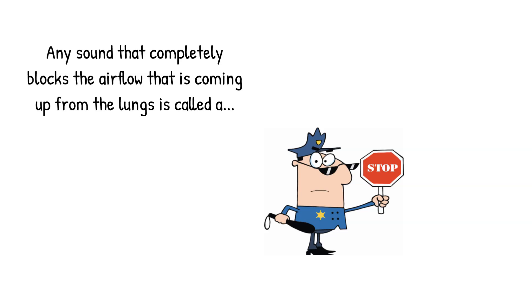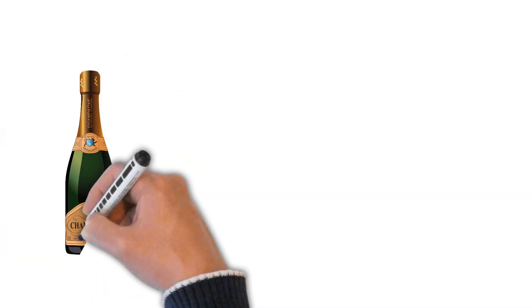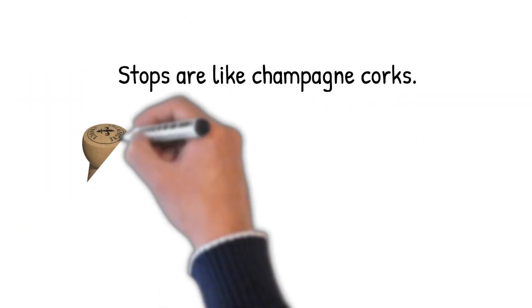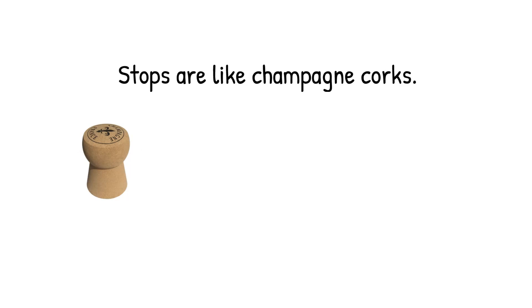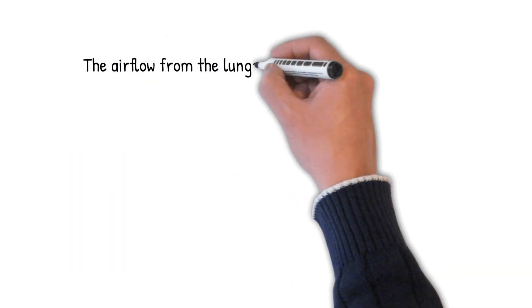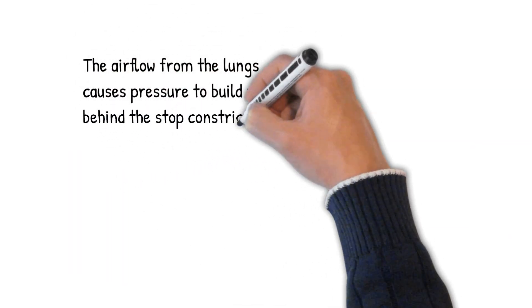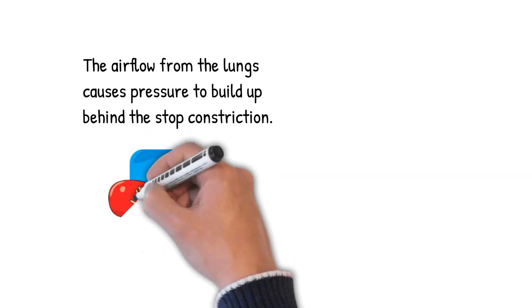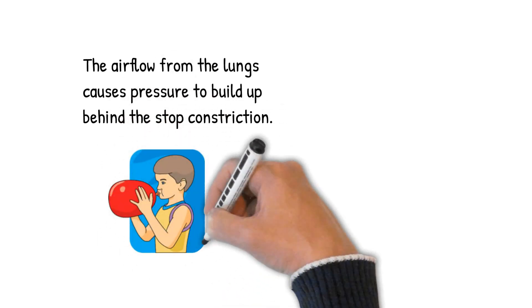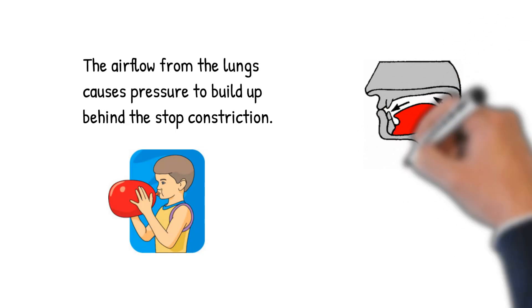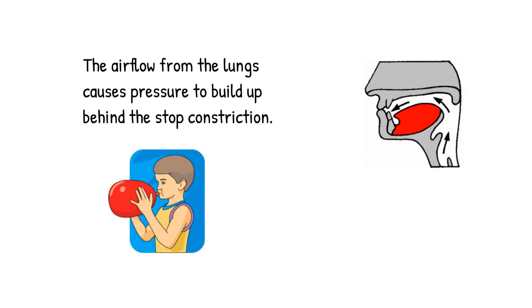And to convince you that we might be a little bit more like champagne bottles than we think, another important property of stops is that because they're blocking airflow that's coming up from the lungs, they're similar to the cork in our champagne bottle. Stops are also similar to our champagne bottle because just like the liquid in the bottle builds up pressure behind the cork, the airflow coming up from the lungs builds up pressure behind the stop constriction—in this particular case, behind the lips.